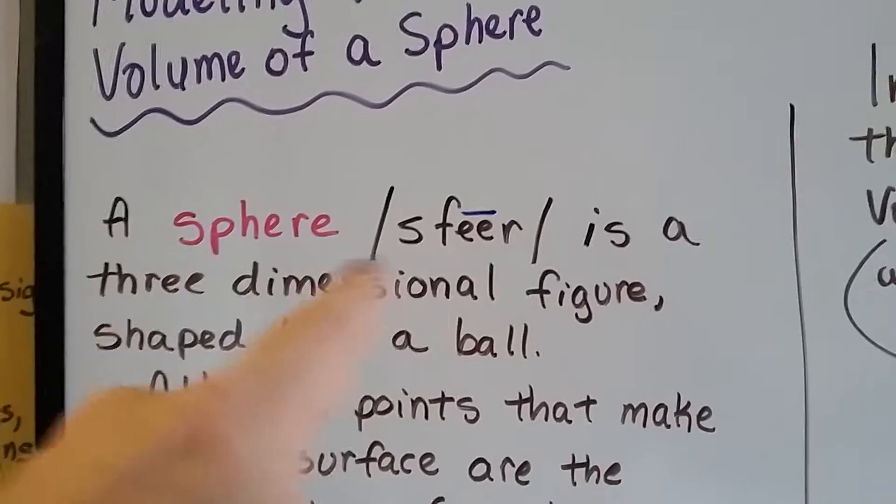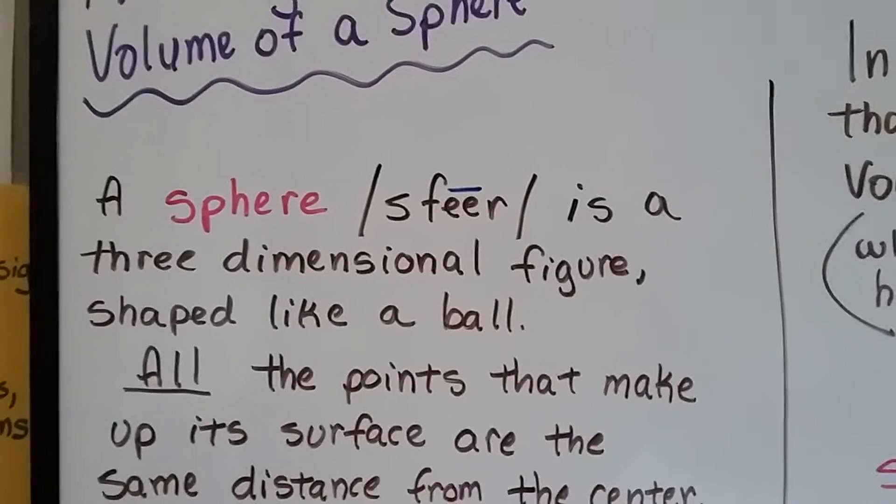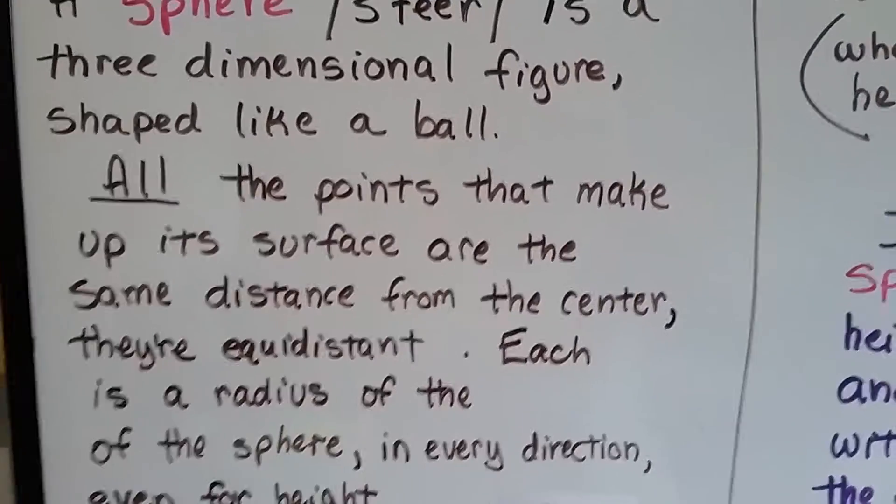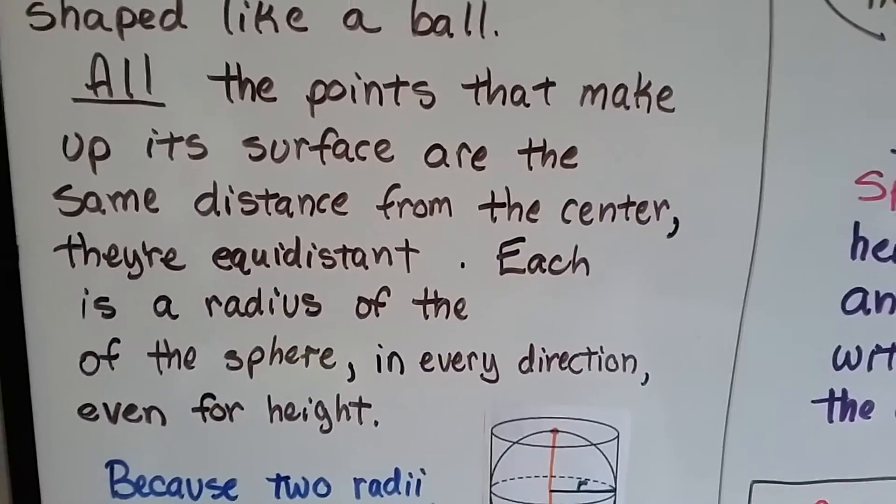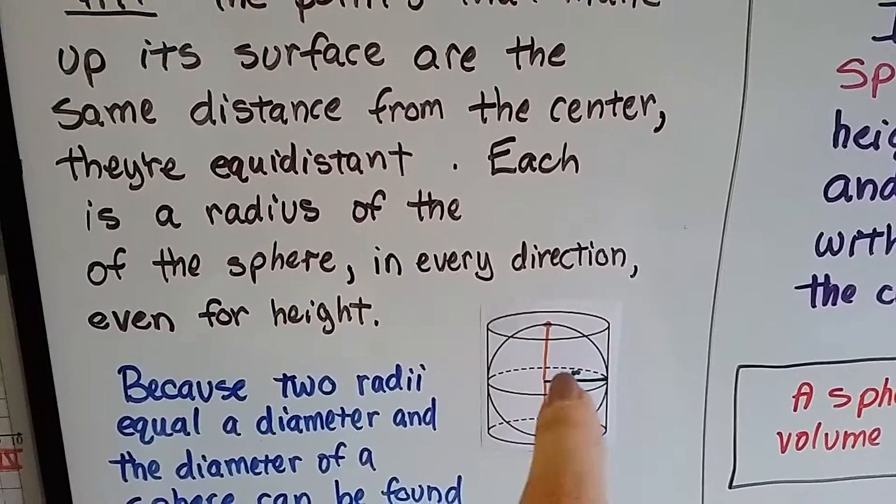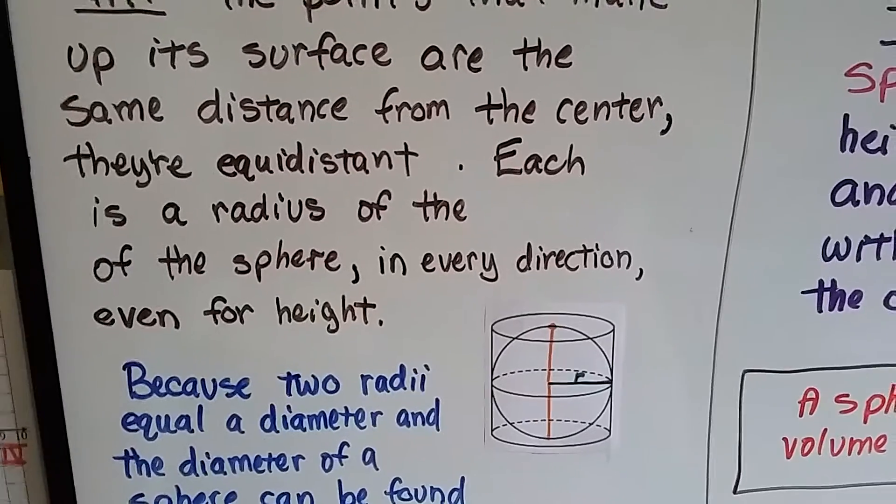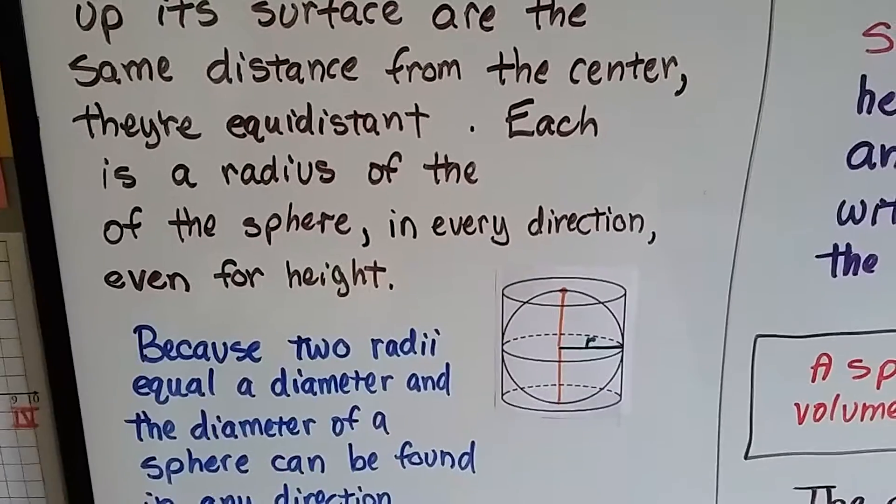The pH makes an F sound. A sphere is a three-dimensional figure shaped like a ball, and all the points that make up its surface are the same distance from the center. They're equidistant. Each is a radius of the sphere. So it doesn't matter what direction you're going in, from the center to the edge, they're all a radius. They're all radii in every direction, even for height.